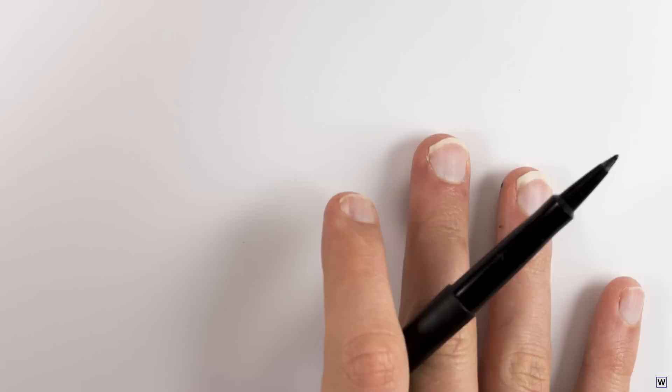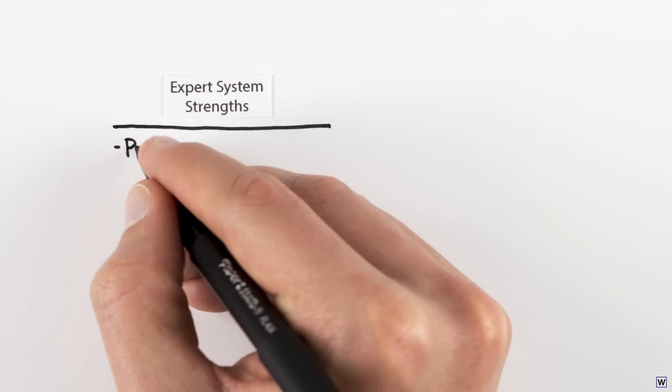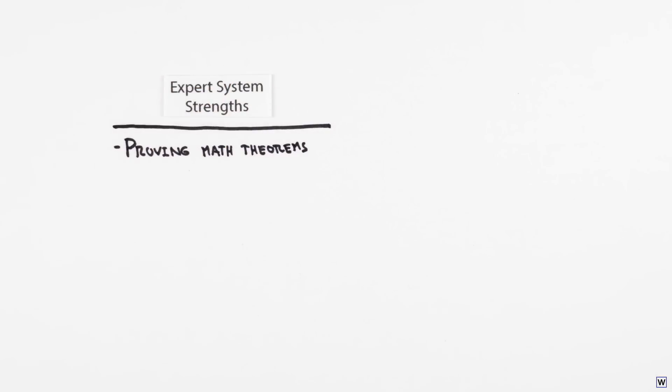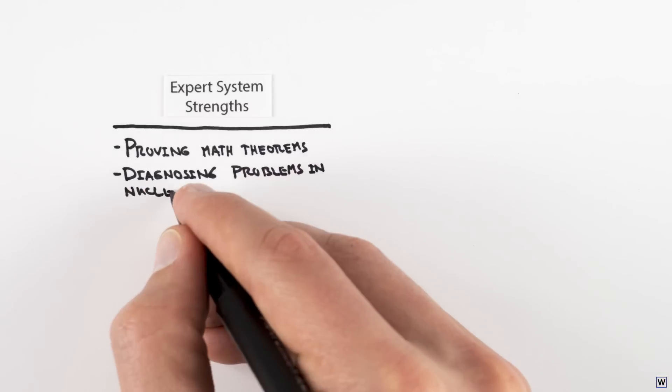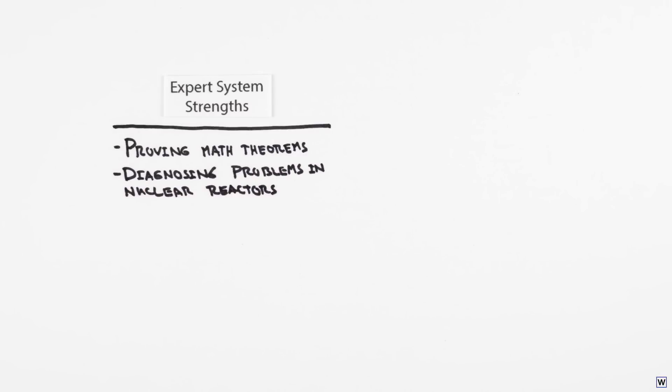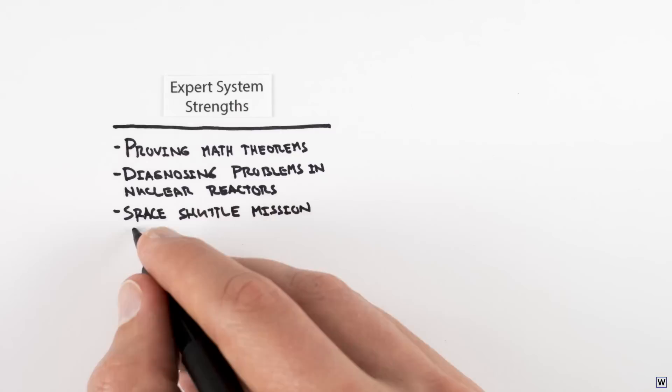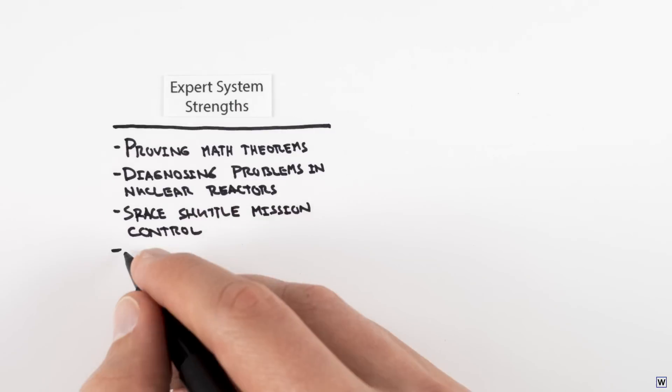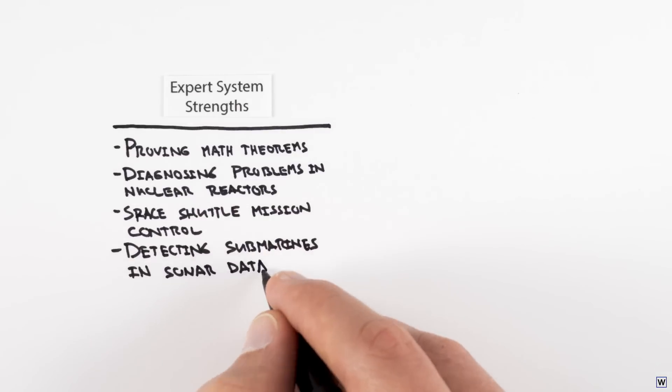While maintaining huge systems of handwritten rules is certainly a daunting task, a deeper problem with the expert system approach also emerged in the 1980s. This problem had everything to do with the types of problems expert systems are able to solve. Expert systems excelled at a specific kind of problem: the type of abstract reasoning problems we humans consider difficult. Things like configuring computer systems, solving logic problems, playing chess, and inferring the structure of chemicals. Tasks that require experts.